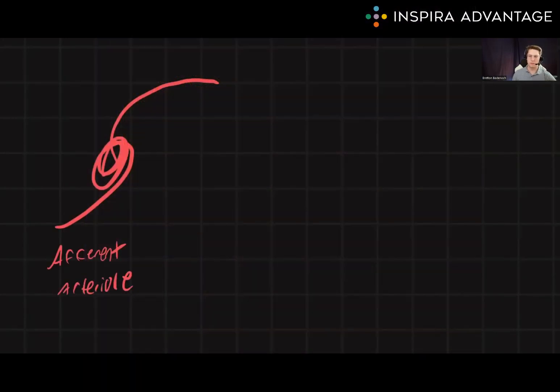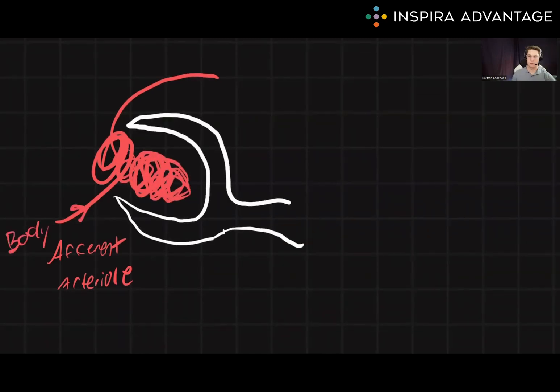The afferent arteriole brings bodily fluid to the nephron at Bowman's capsule. The bundle of arterioles inside Bowman's capsule is called the glomerulus. The glomerulus filters out large proteins and only allows water or other small solutes through, like sodium, potassium.